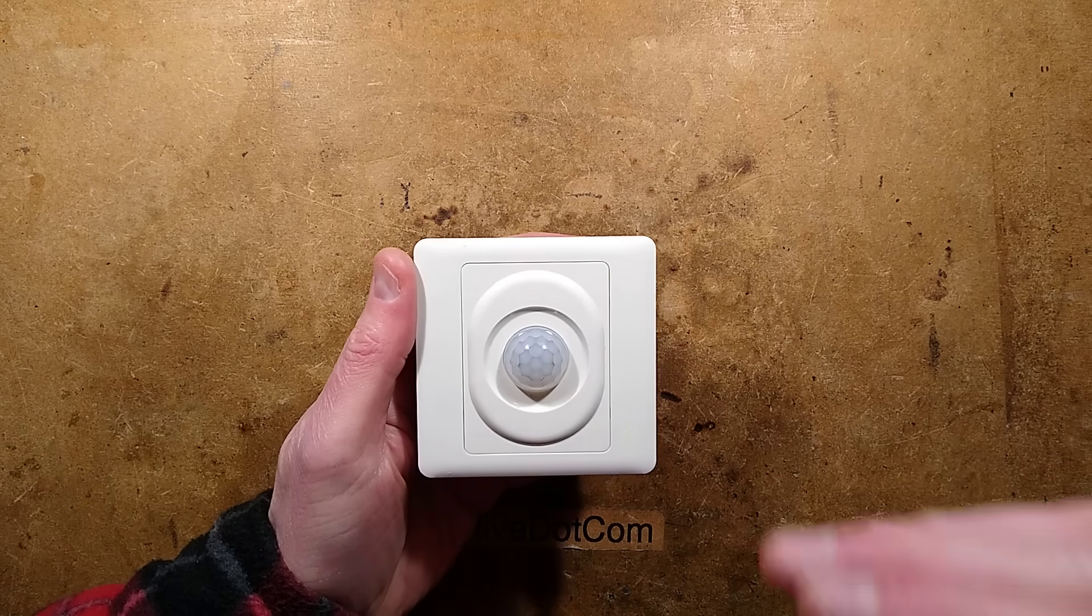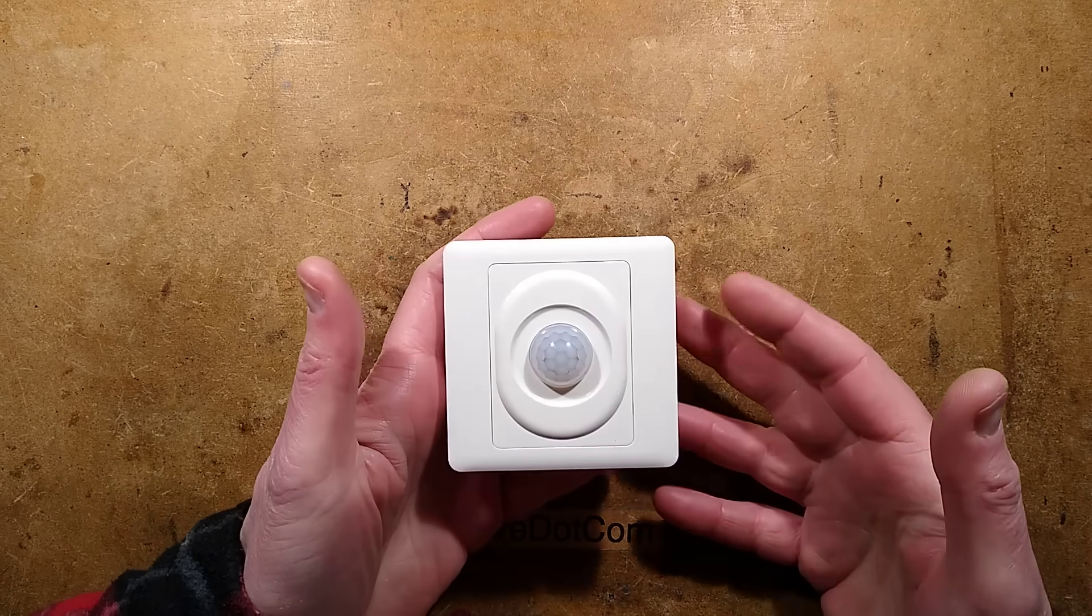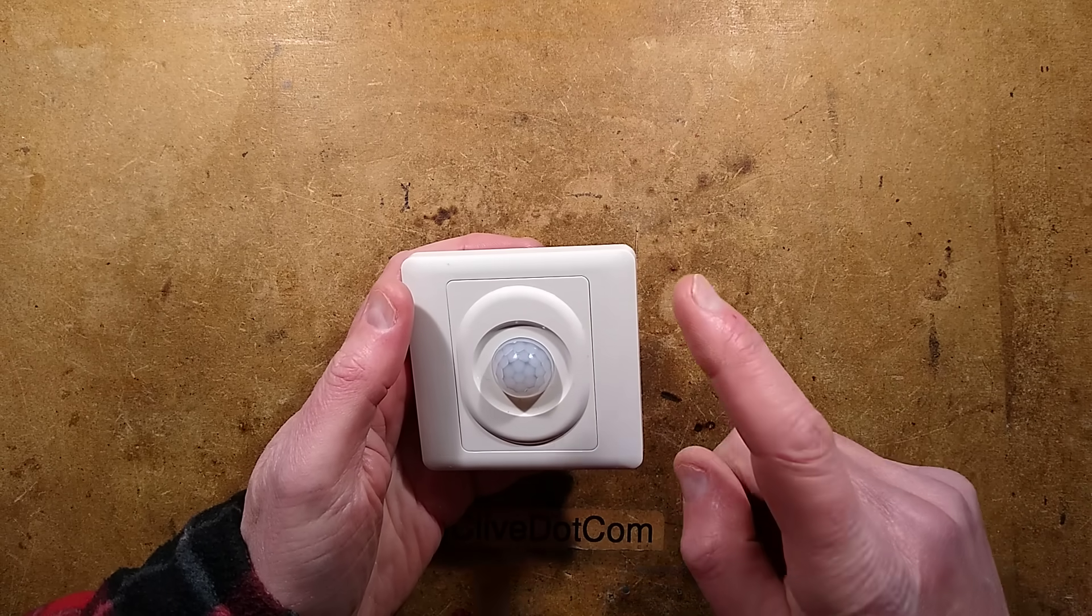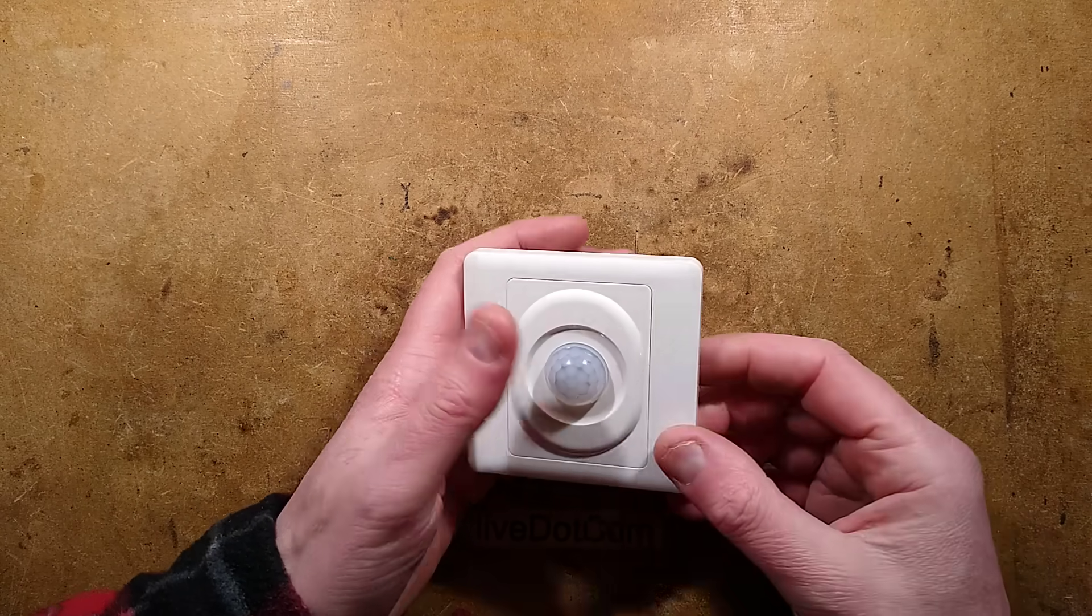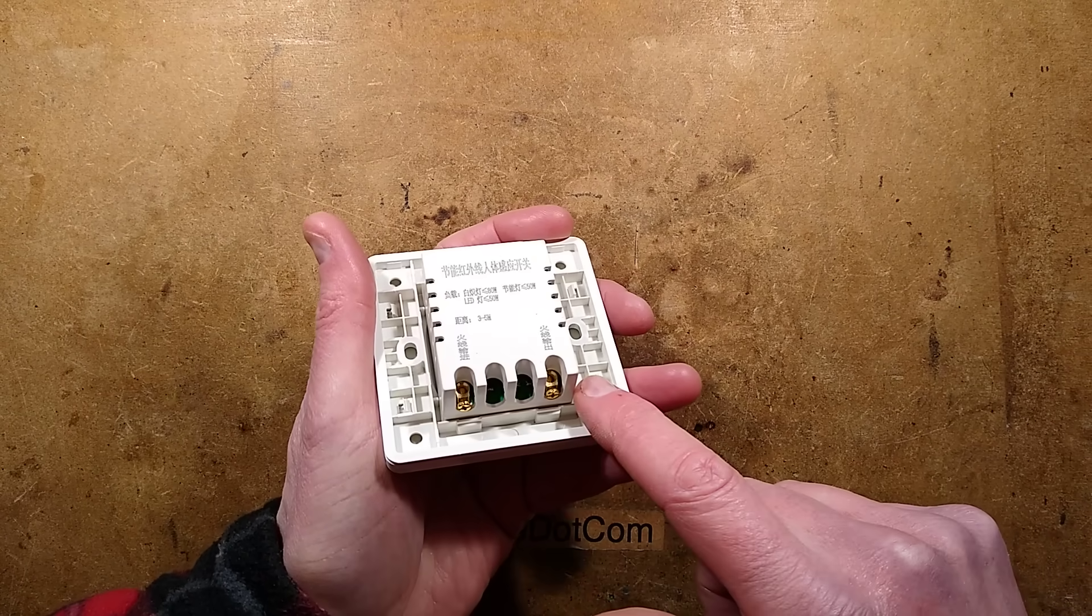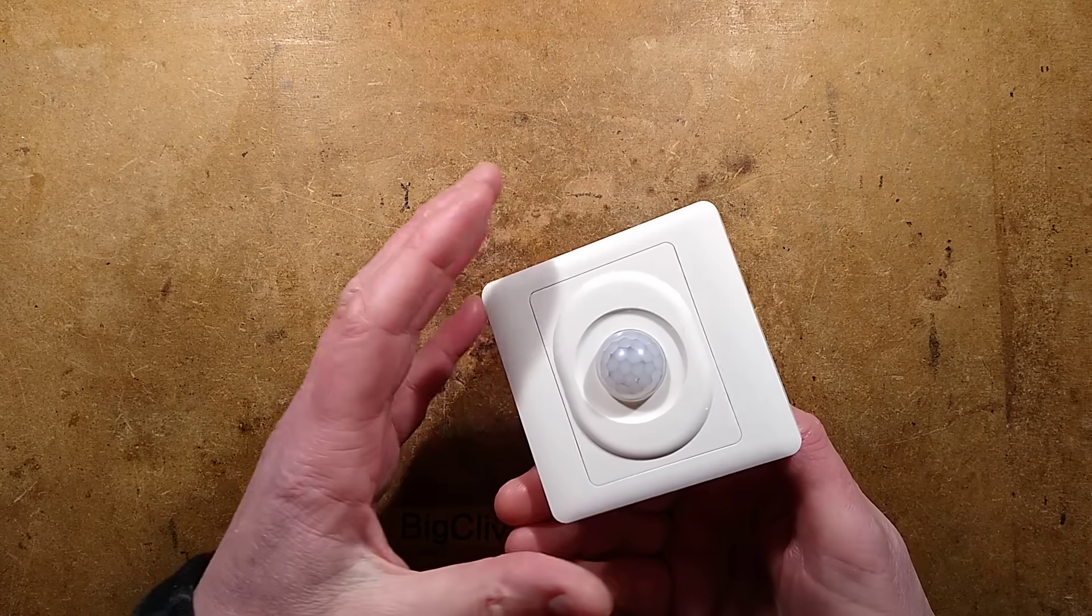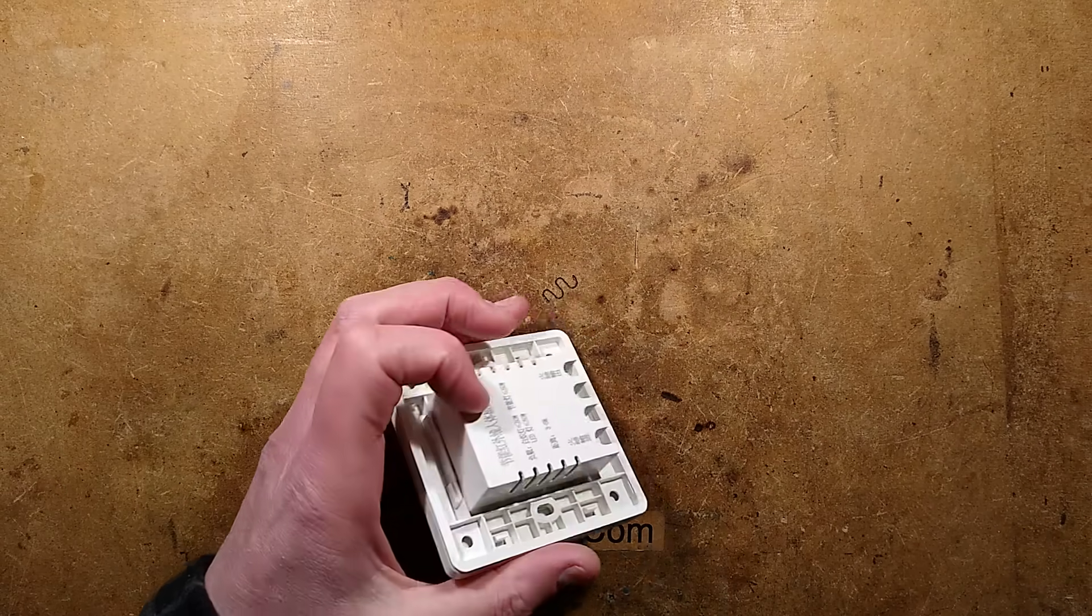Although I have taken many passive infrared detectors apart in the past and reverse engineered them, there's one type I have never reverse engineered. It's the two terminal type that doesn't require a neutral. It literally goes in line with a light bulb and it can be used to actually control that light bulb.